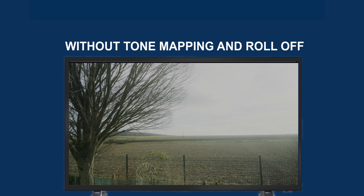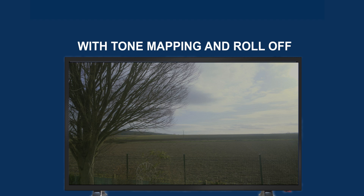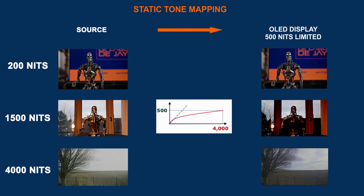When you have static metadata, you have only one reference for all the content. But in a movie, the scenes are more or less bright — none of them have the same light intensity or the same value of lighting. So the content will be adapted according to only one characteristic, and obviously it won't be shown in the most realistic way. The tone mapping is done with these values.